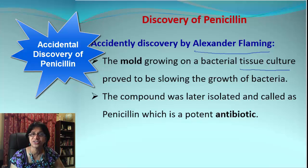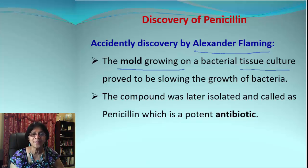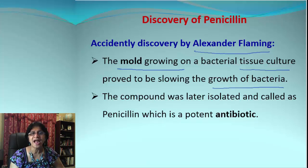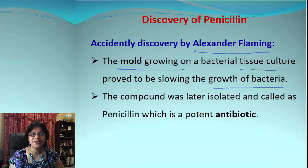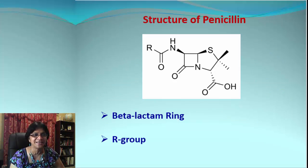growing some tissue culture and he left for a vacation. He came back and found mold growing on his bacterial tissue culture. As a result, it actually inhibited the growth of bacteria. That made him think that the mold has some properties which can potentially kill the bacteria, and that's the reason scientists pursued and decided to isolate the chemical that was called penicillin, which was a very potent antibiotic.